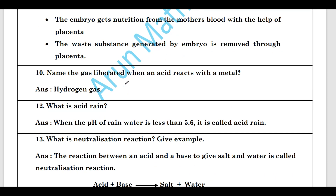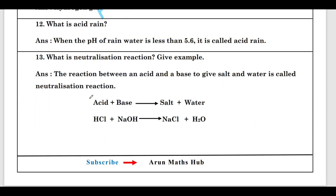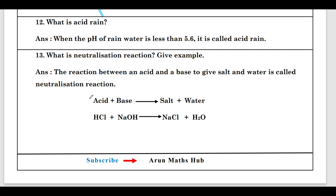Name the gas liberated when an acid reacts with a metal. When an acid reacts with a metal, hydrogen gas is released. What is acid rain? When the pH of rainwater is less than 5.6, it is called acid rain. What is a neutralization reaction? The reaction between an acid and a base to give salt and water is called a neutralization reaction.